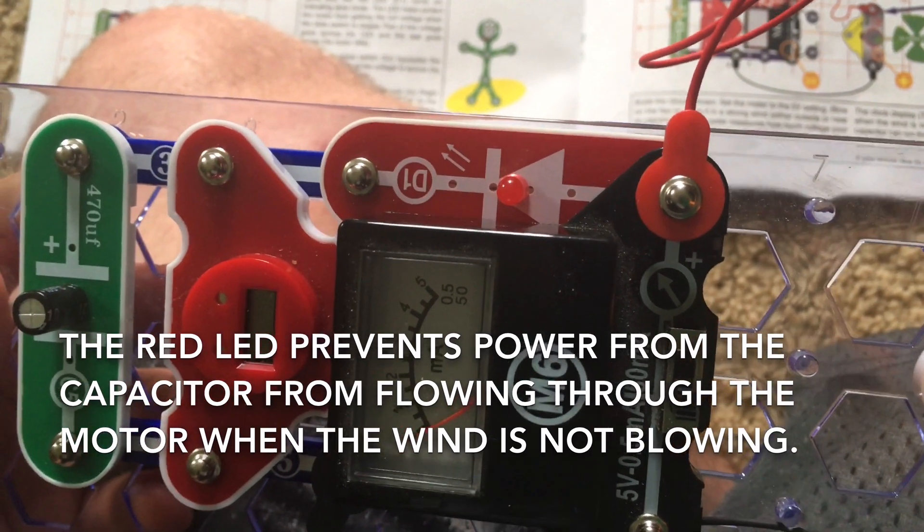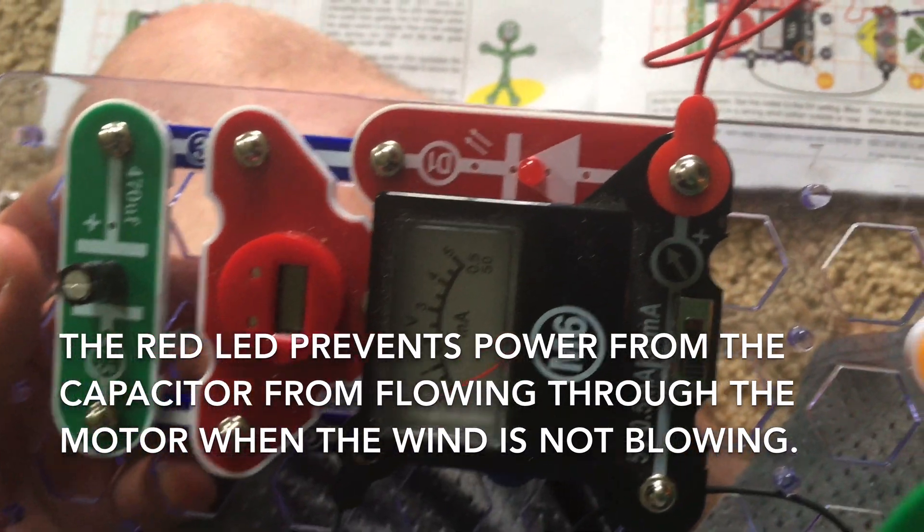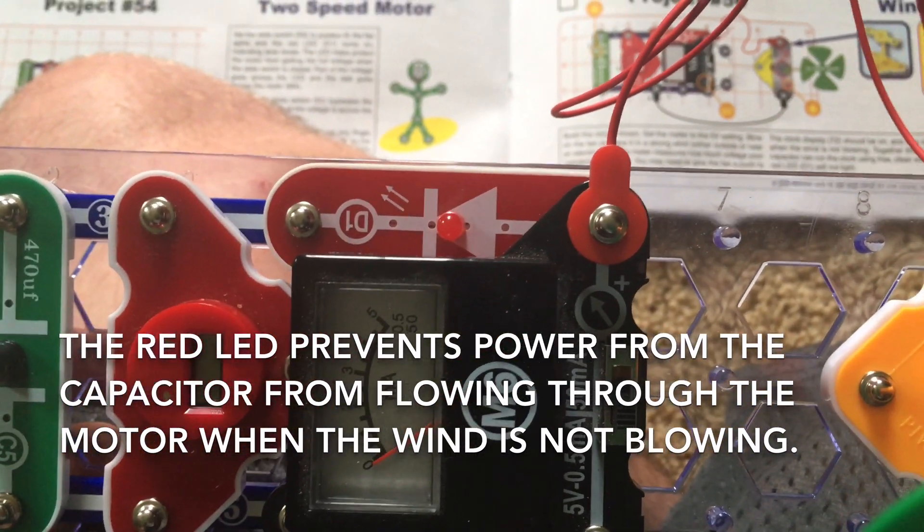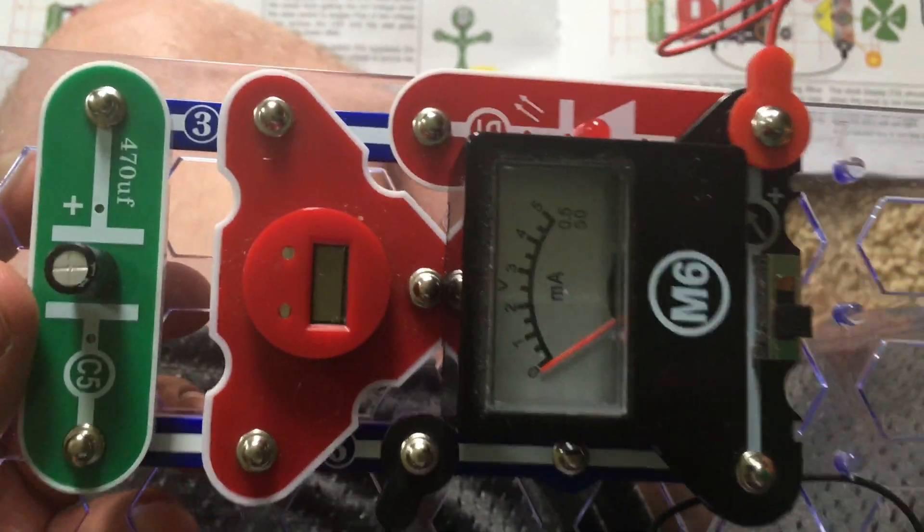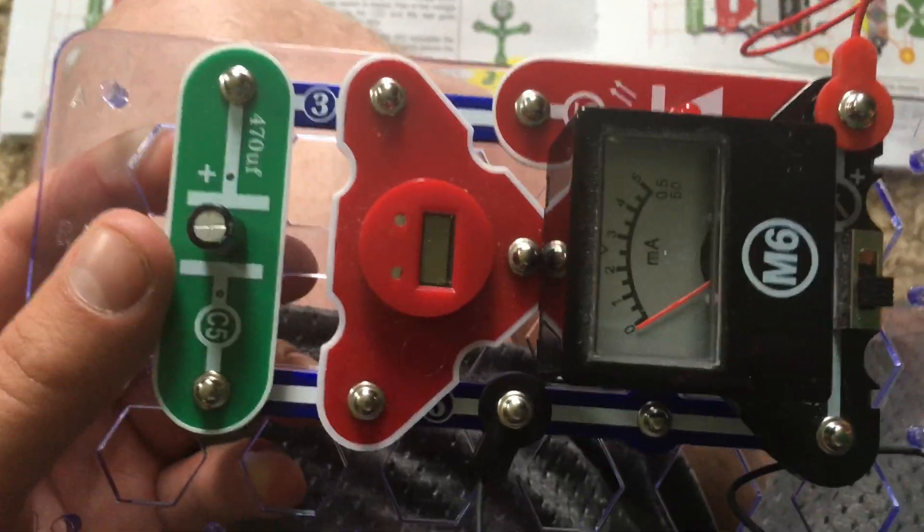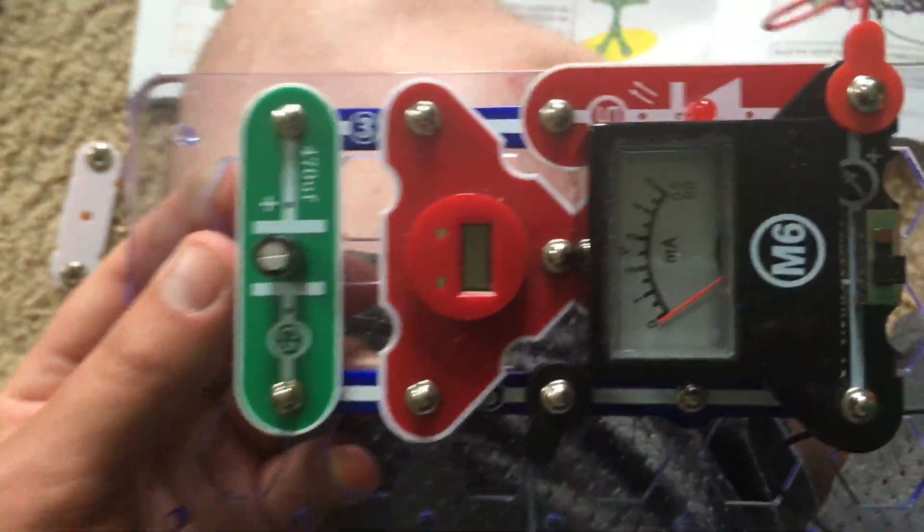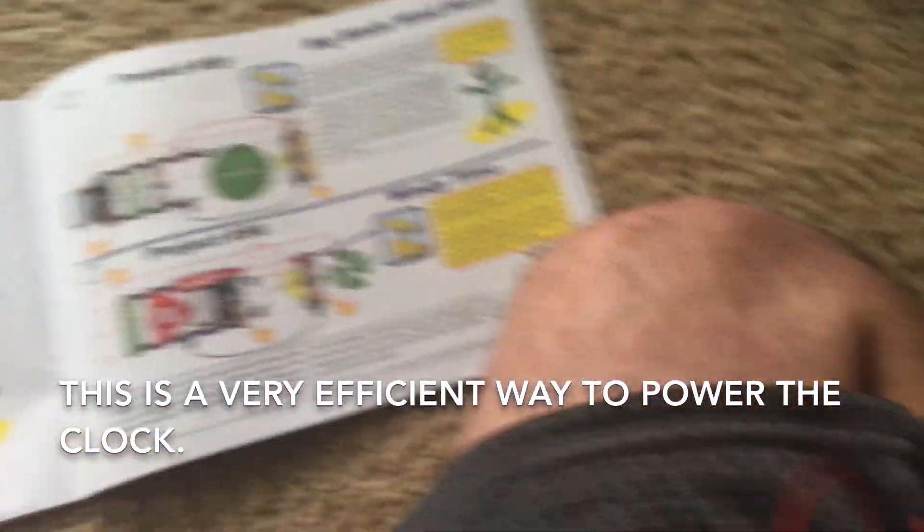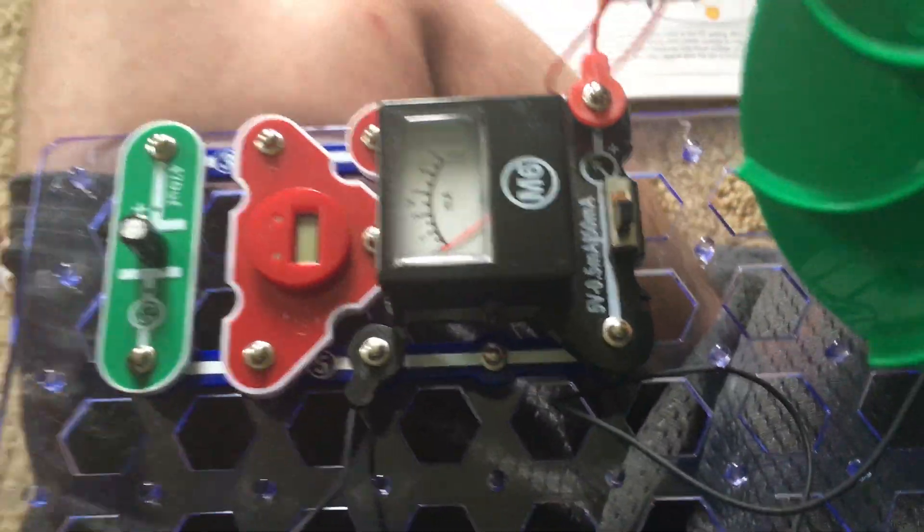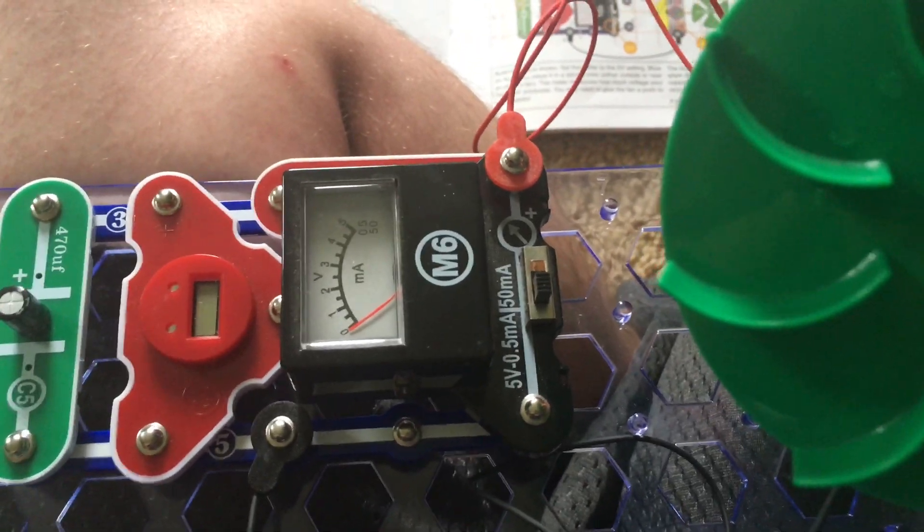The red LED will not light and it is used to prevent electricity from discharging from the capacitor through the motor when the wind is not blowing. This is a very clean way to power the clock. But once again, I could not get it to work, so I'm very sorry about that.